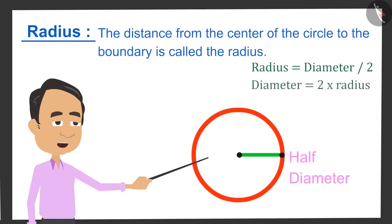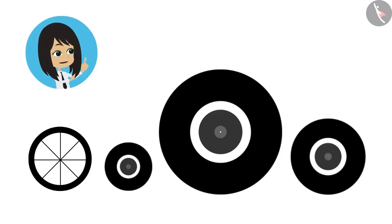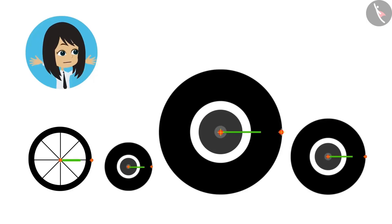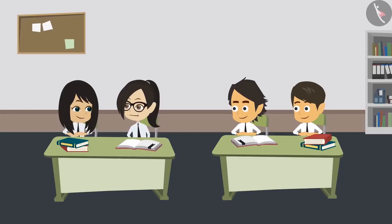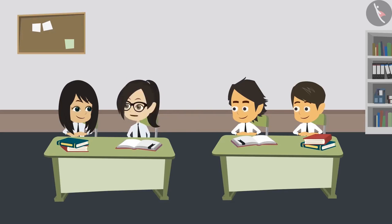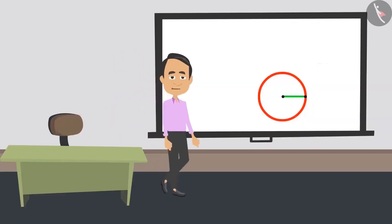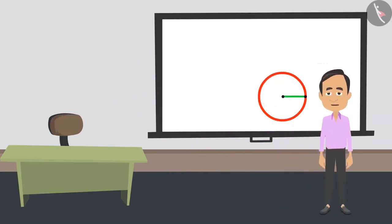You should know another property of a circle. Sir, what is a radius? The distance from the centre of the circle to the boundary is called radius. It is half of the diameter, so it can also be called half diameter. That means if we measure the distance from the centre of the wheels to the boundary, then we will know their radius. And we can also tell the difference between wheels when we know the radius of different wheels.